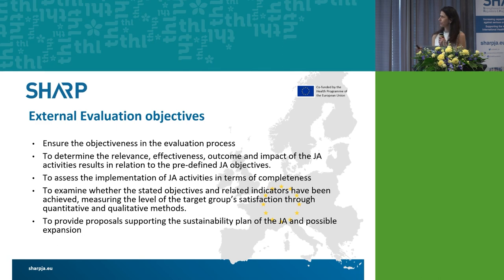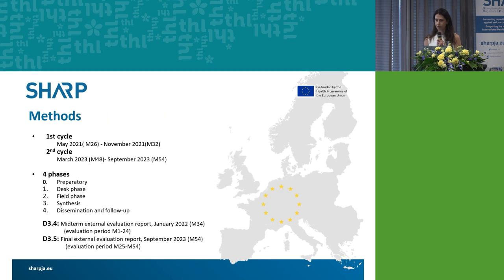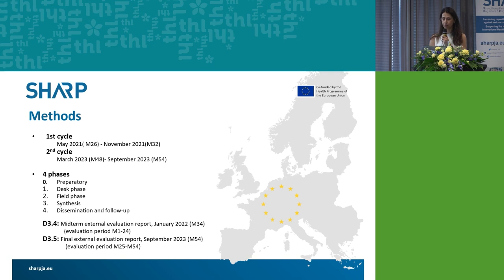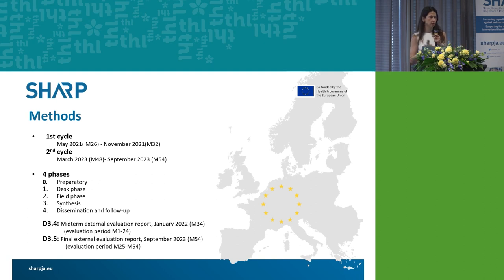The external evaluation objectives and methods have already been presented at previous meetings so we will not go through them in detail today. I would like to point out that we are now in the synthesis phase of the second cycle. As already mentioned, we are engaged in six-month cycles. The final external evaluation report is Deliverable 3.5, and it is expected to be finalized at the end of the joint action in September. Our plan is to disseminate it for comments approximately four weeks before final submission.